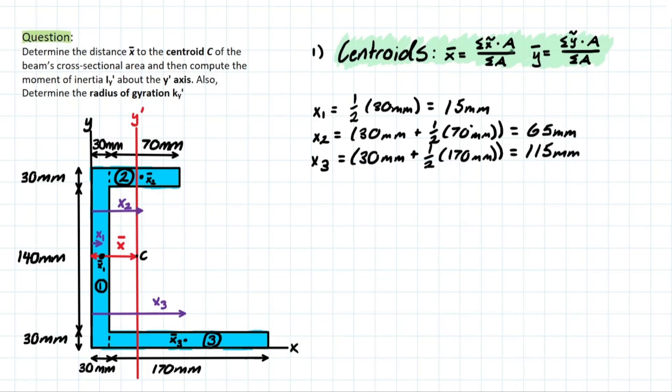Next, we need to solve for the areas to use this formula. So area one is simply going to be area for a rectangular shape, and area one is going to be 30 plus 100, 40 plus 30, which is 200 mil. So we have 200 times the length of it, which is 30 mil, and then multiplying those together is going to give us 6,000 millimeters squared.